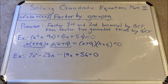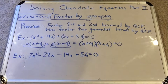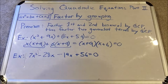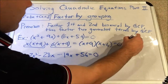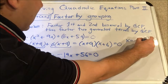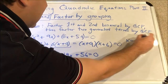Now we've got a simple binomial product: (x + 9)(x + 6). We use the zero product property and get the solutions x = −9 and x = −6.